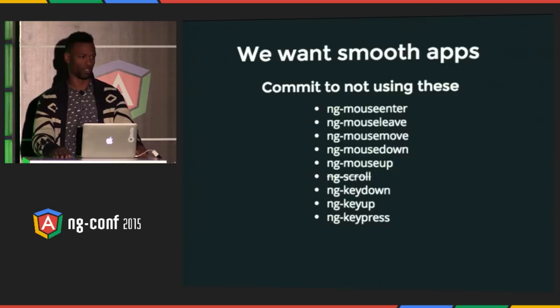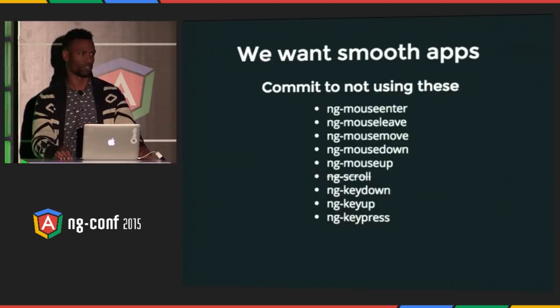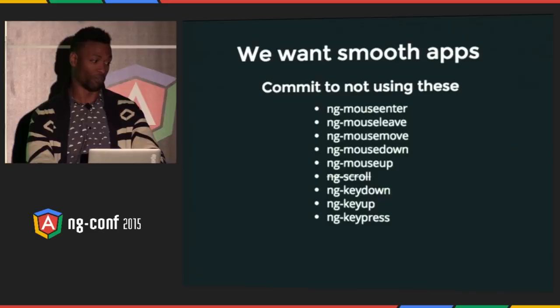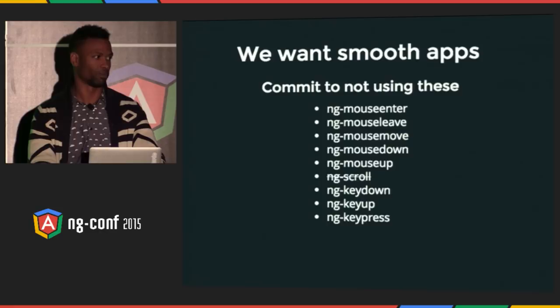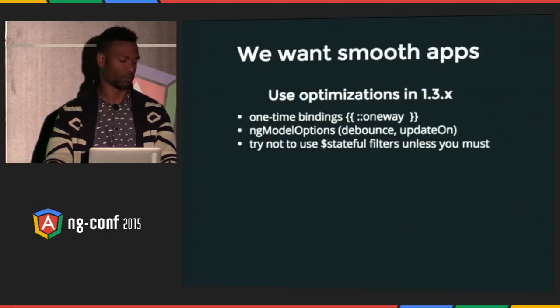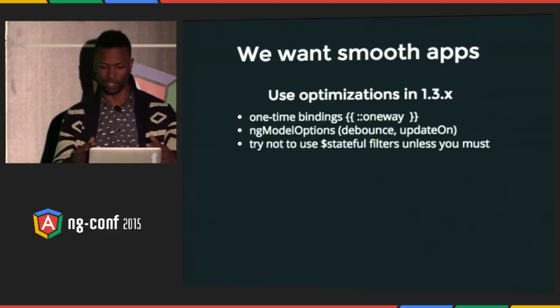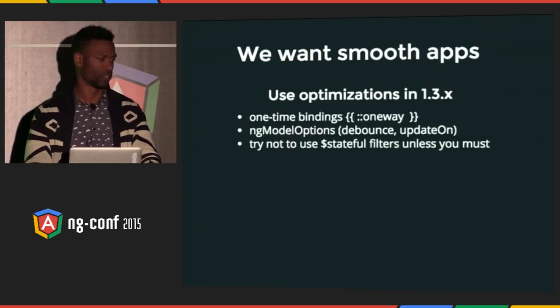I'm pushing for everyone to commit to not using ng-show and ng-hide at all — I don't see any compelling use case where you'd ever need them over ng-if. If you have a good argument for why you need these directives, let me know. Also use the optimizations built into Angular 1.3: one-time bindings are awesome, ng-model options with debounce and update-on can really save you depending on timing, and try not to use stateful filters. That's it — continue to watch those Sasquatches.